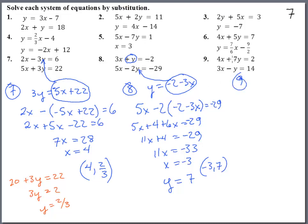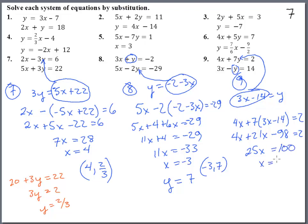Last one. Number 9. Let's get y by itself by adding y over here and subtracting 14. So 3x minus 14 equals y. And this guy can now go up into the y. So we get 4x plus 7 times y. That equals 2. 4x plus 21x minus 98 equals 2. So we get 25x. Add 98 to both sides. Equals 100. x equals 4.